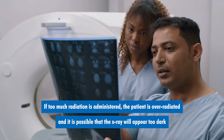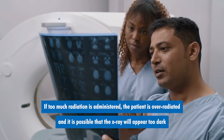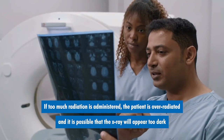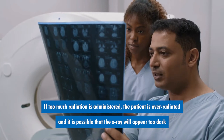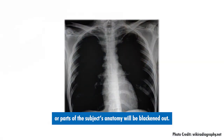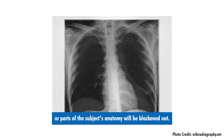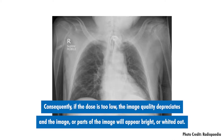If too much radiation is administered, the patient is over-radiated and it is possible that the x-ray will appear too dark, or parts of the subject's anatomy will be blackened out. If the dose is too low, the image quality depreciates and the image, or parts of the image, will appear bright or whited out.